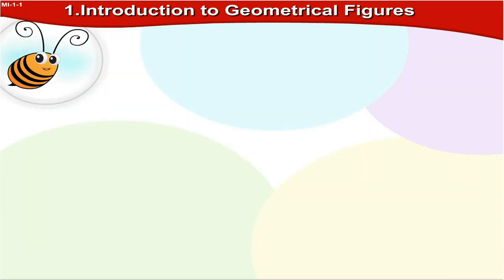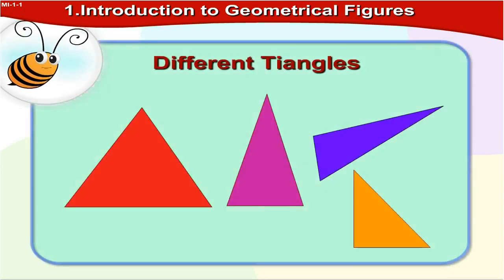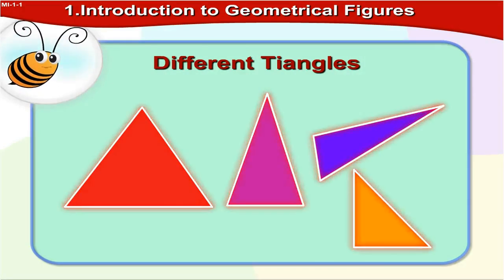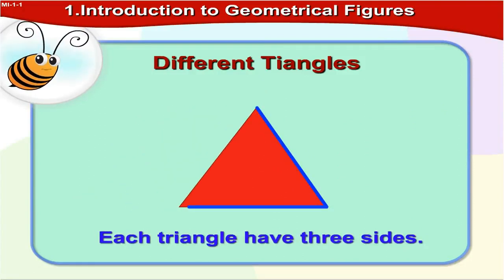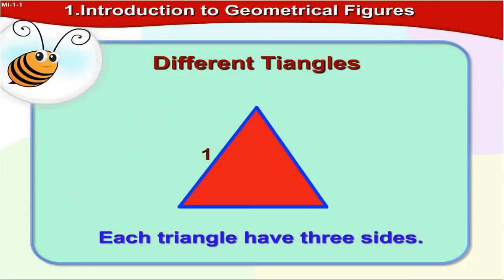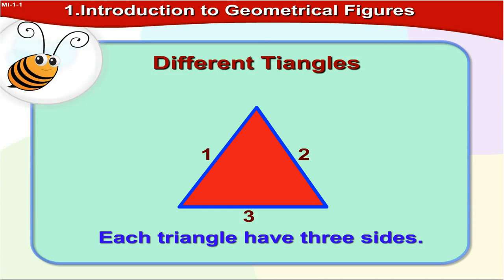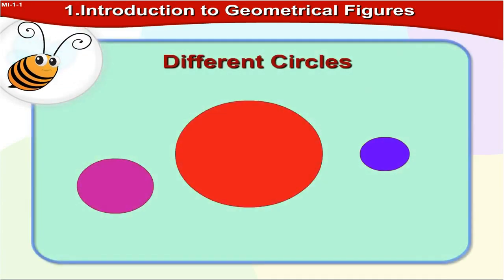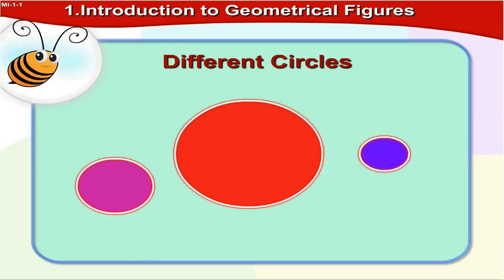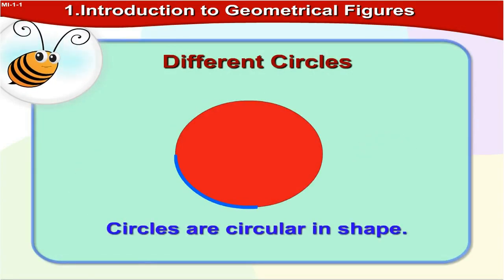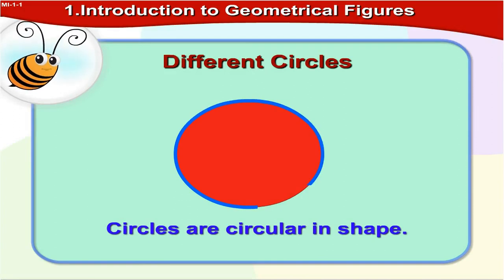Now let us see different types of triangles. See this picture. All these are triangles and each triangle has three sides. All of them are circles and they are circular in shape.